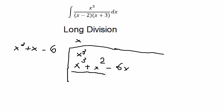So in this situation, we need to subtract in here. And you got about negative x squared plus 6x.